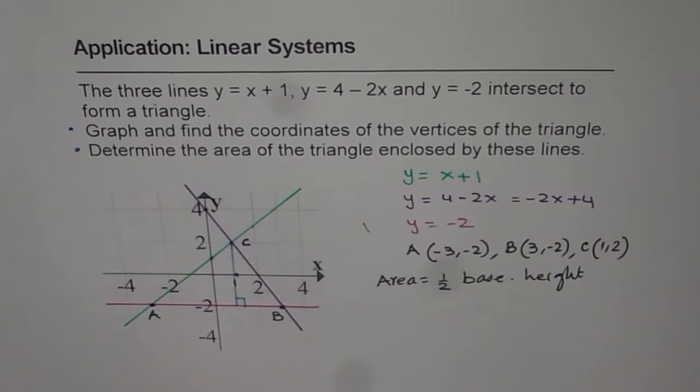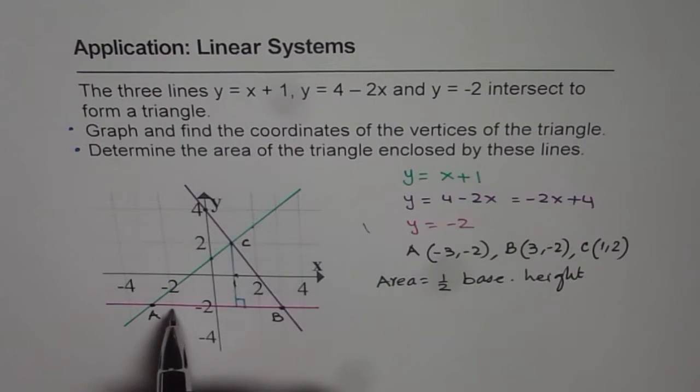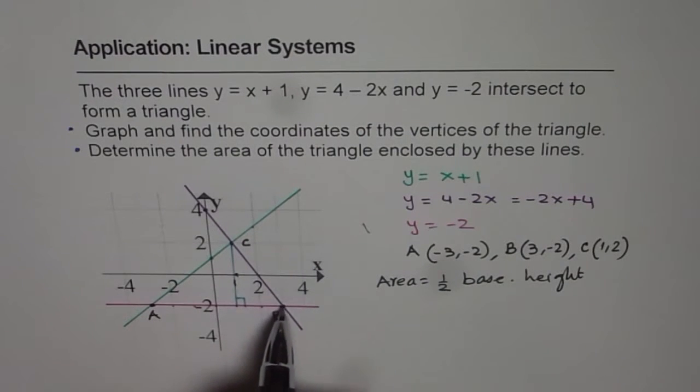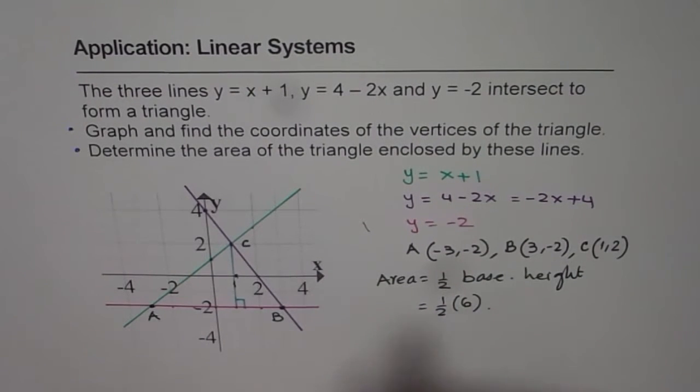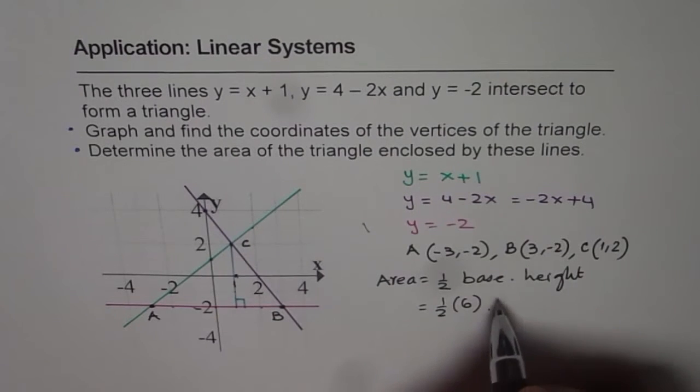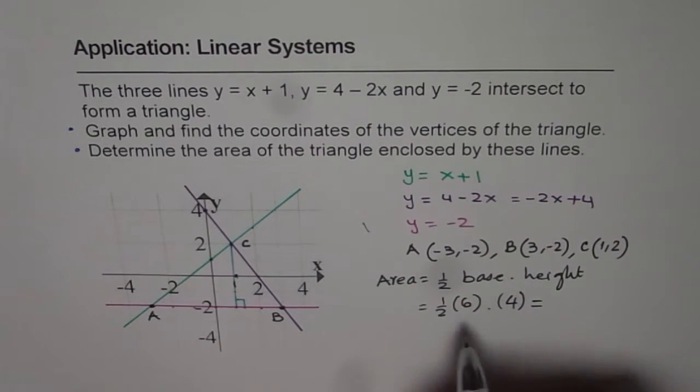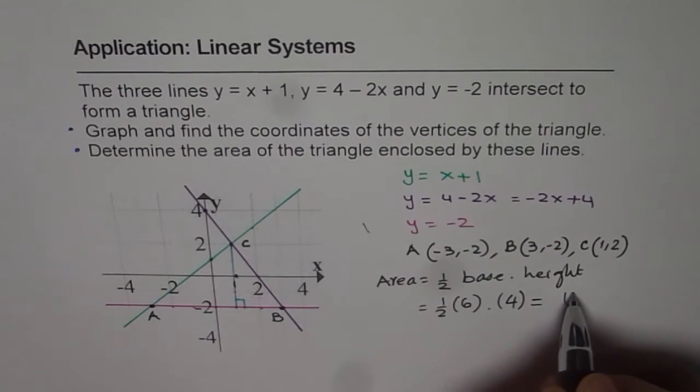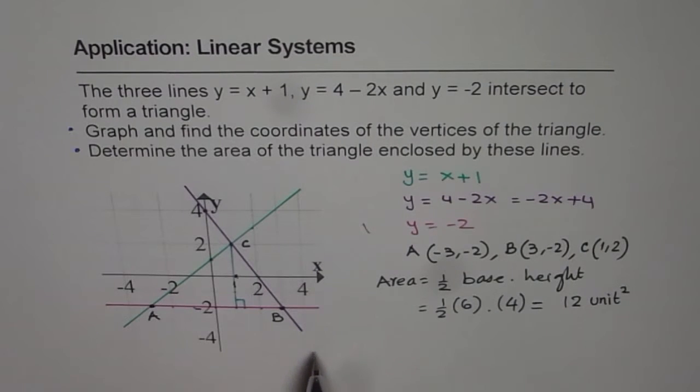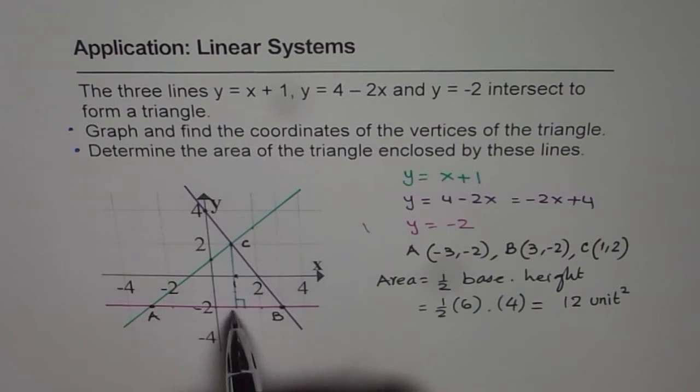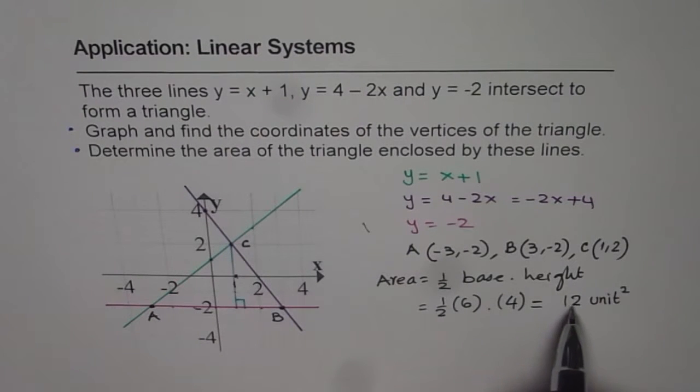Now this is a simpler problem. In a way, we can easily find the distance between A and B. It is difference in their x values: 1, 2, 3, 4, 5, 6. So the base is of 6 units, so half times 6, and height is 1, 2, 3, 4. 4 units. So that gives us half of 24, which is 12 units squared. So the area of this triangle is half of base, which is 6 units, and height is 4 units. So we get 12 units squared.